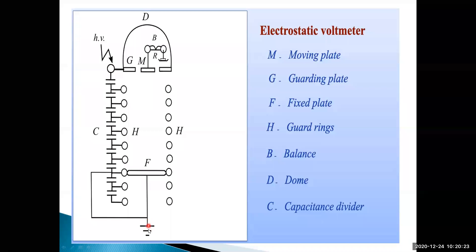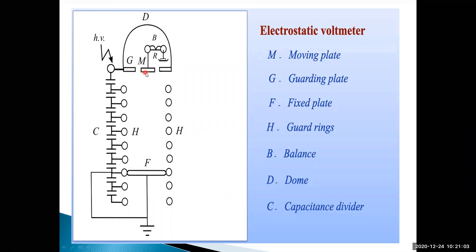The next terminal is ground - another terminal is grounded. Here M is called the moving plate, and G is called guarding plates. These are arranged in a circular manner - for understanding they are visible in a straight line. The moving plate is enclosed by the guarding plate in a circular manner. In the middle is the mobile one, and F is called the fixed plate.